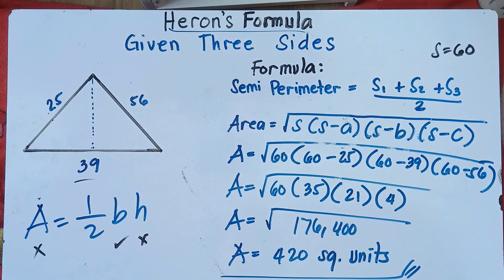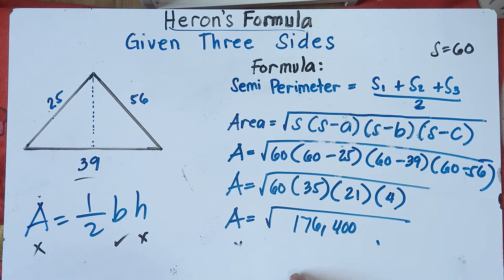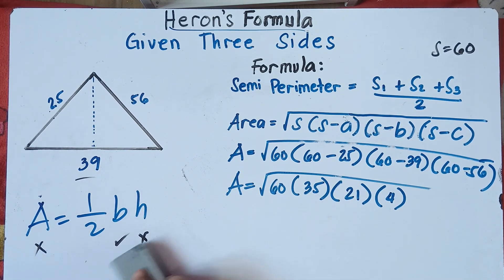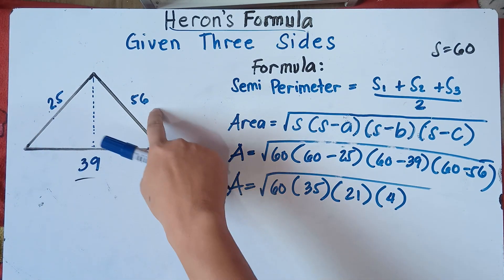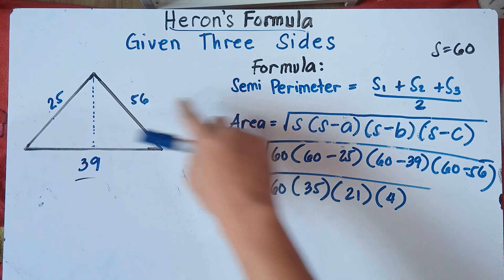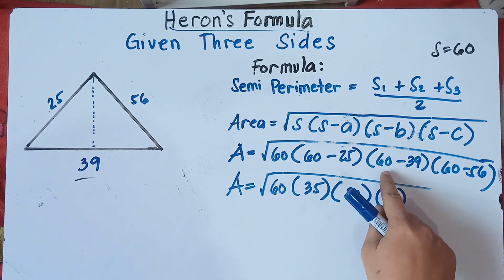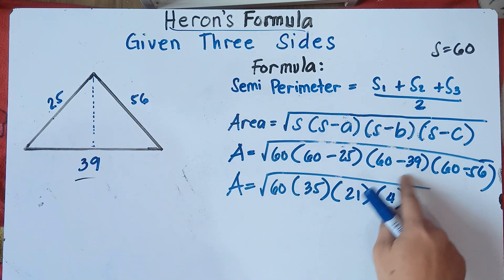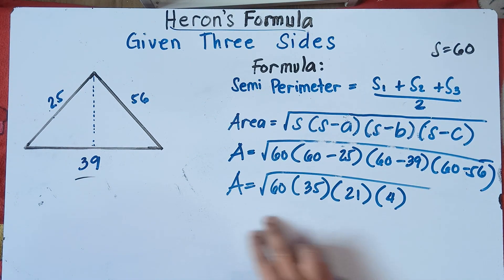That's how you solve for the area using Heron's formula given three sides. Now, what if the teacher will not allow you to use a calculator? We'll do the prime factorization. Remember that prime numbers are numbers which have only two factors: 1 and the number itself. For example, 5 is a prime number because its only factors are 1 and 5. To solve without a calculator, you can use prime factorization.